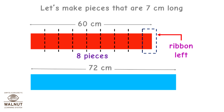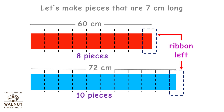Now make pieces of 7 cm from the blue ribbon. If you divide 72 by 7, you will get 10 — that is 10 equal pieces. We have 2 cm of ribbon left. So we cannot make pieces that are 7 cm long. We just can't divide it exactly.